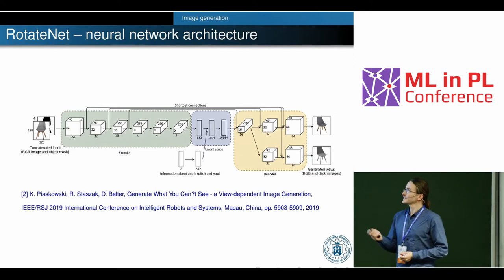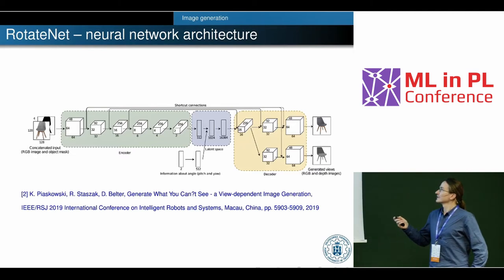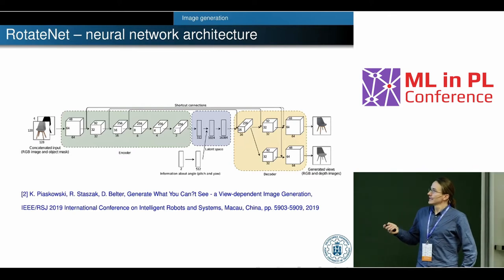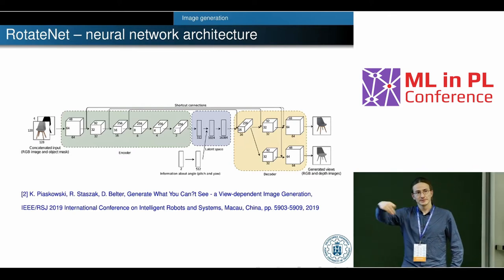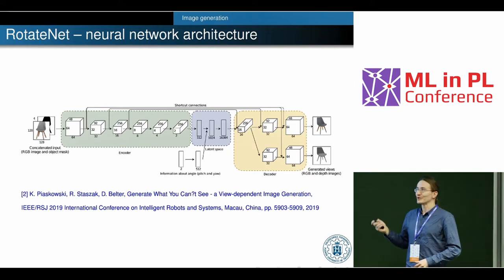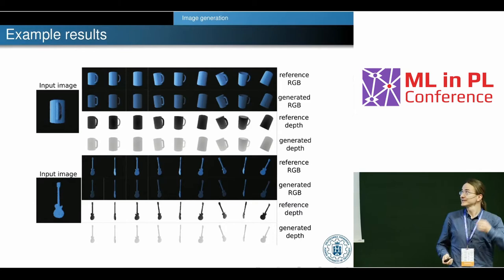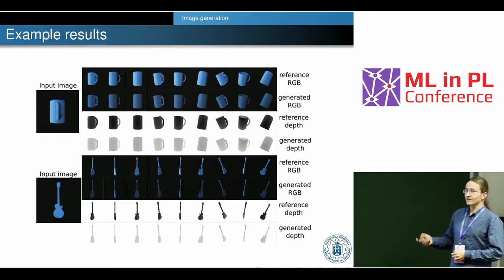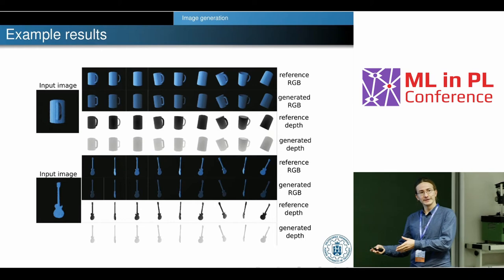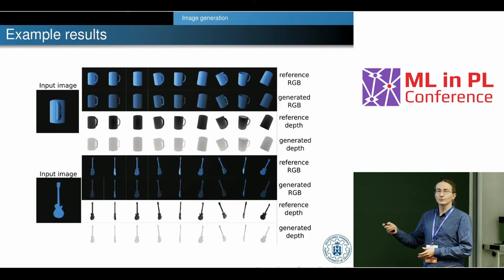We want the robot to have the same capabilities we humans have. This is our architecture: on the input we have an RGB image and the mask of the object; on the output we have RGB and depth images. We can provide the reference position of the camera — so we want to hallucinate the view of the object. Here are some results. This is the only input image plus the reference angle, and for each reference angle we get the output images generated by our neural network.